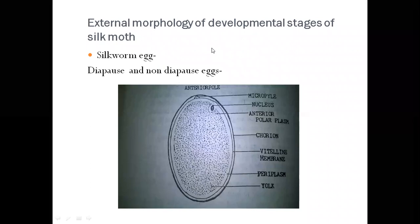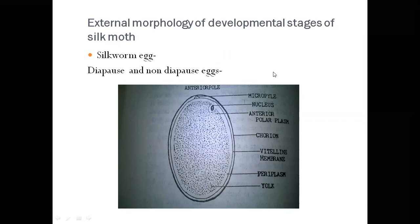After the introductory part of sericulture, our next point is external morphology of developmental stages of silk moth. These developmental stages include egg, larvae, pupae, and adult silk moth. We start from the egg. These four stages include the life cycle of silk moth. Silk moth lays two types of eggs: diapause and non-diapause eggs, also called hibernating and non-hibernating eggs.